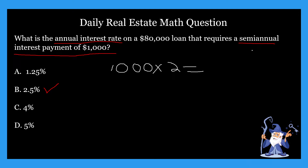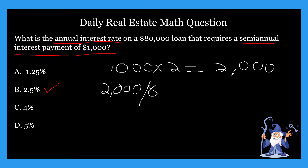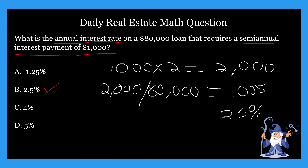We're going to multiply that by two. Now, if this said quarterly interest payment, we would multiply by four — whatever the period is, we adjust accordingly. That gives us $2,000. From there, all we have to do is take that $2,000 and divide it by $80,000. The math itself isn't hard — it's just the steps and figuring out the order, and whether you multiply or divide. That's the tricky part. $2,000 divided by $80,000 gives us 0.025, or 2.5%, which is our answer.